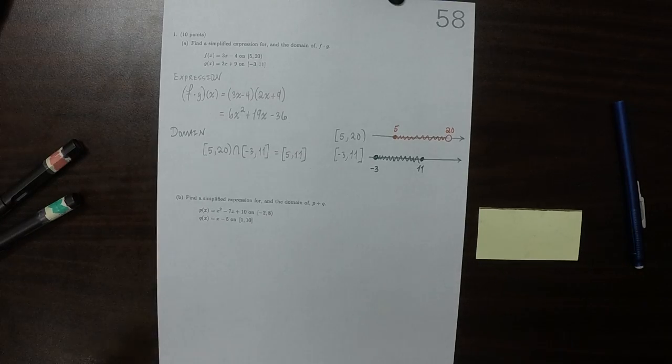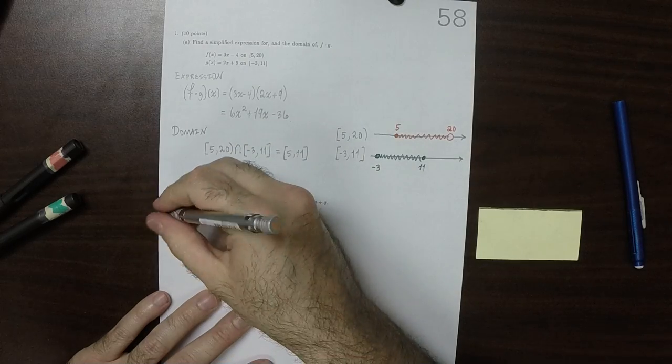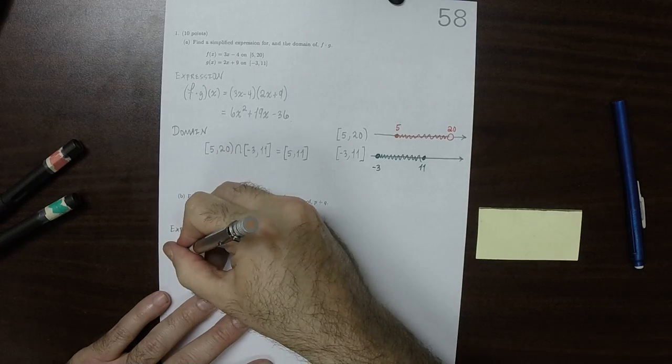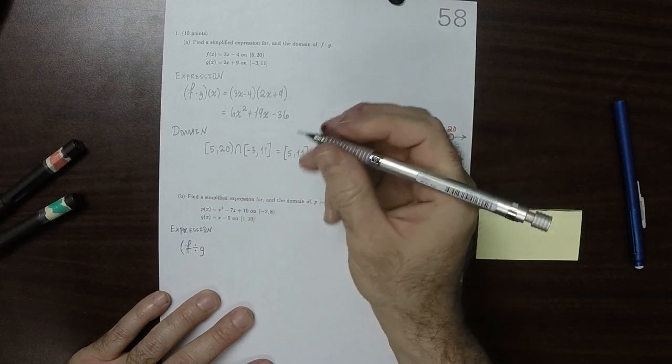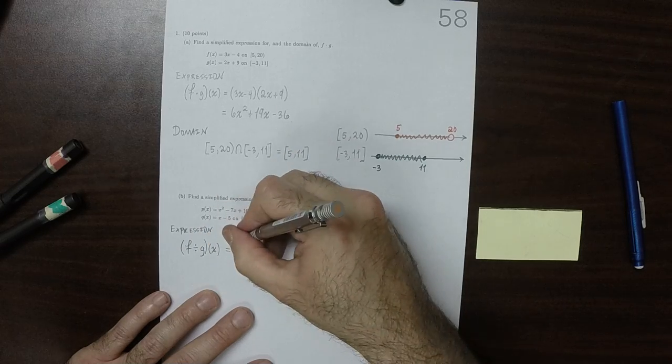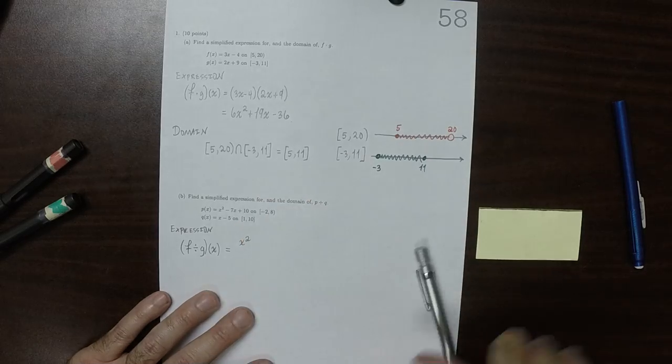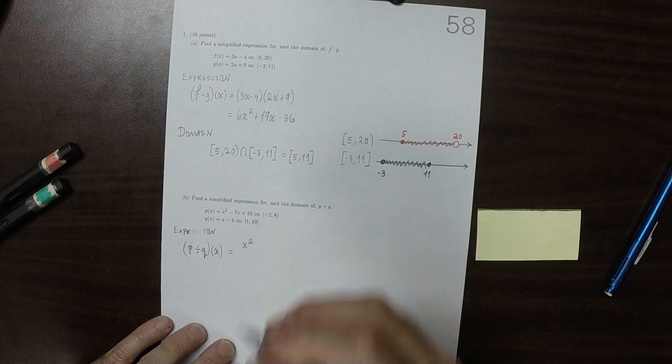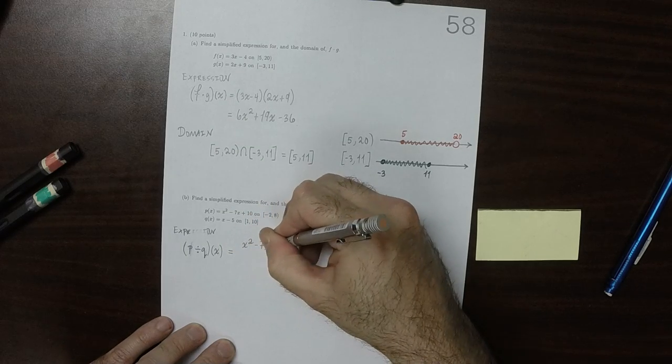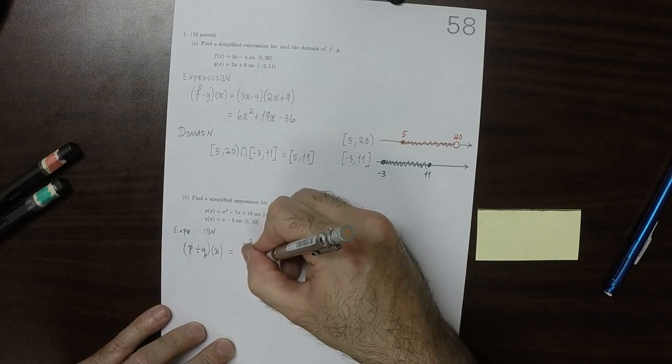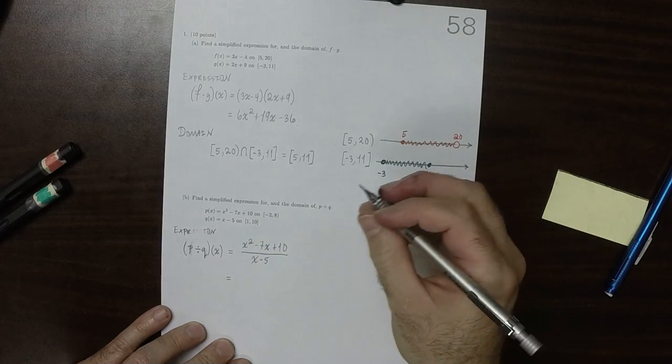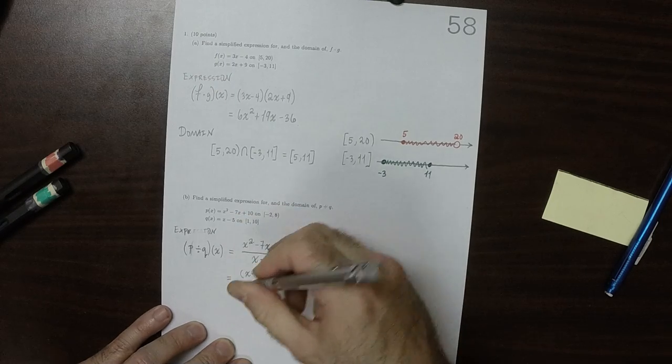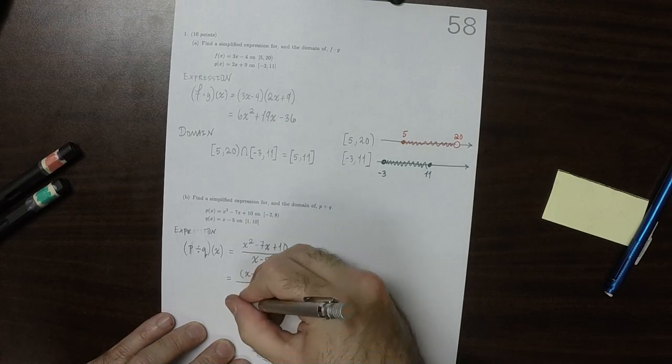As for this one, the expression p divide q evaluated at x, that is x squared minus 7x plus 10 over x minus 5. But that numerator factors into x minus 5 times x minus 2, and then this divided by x minus 5. And it says to simplify so that we get x minus 2.